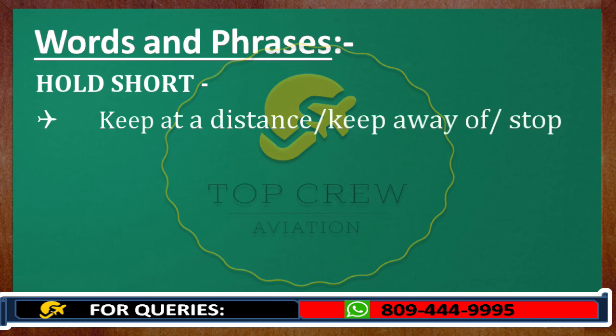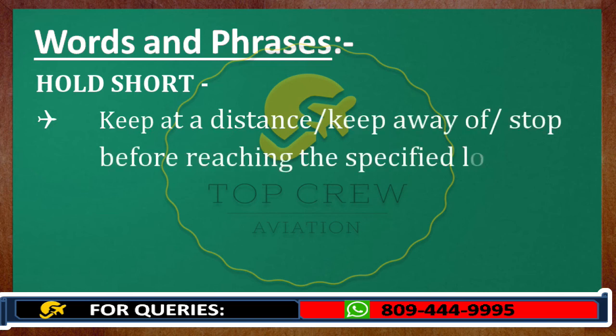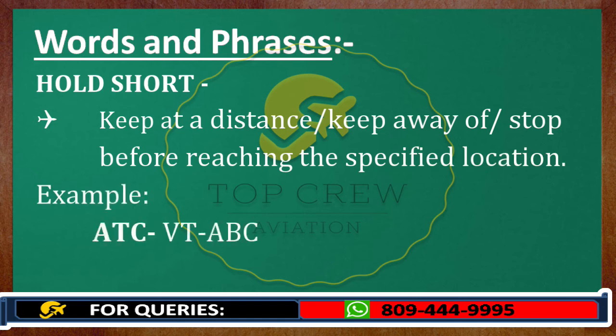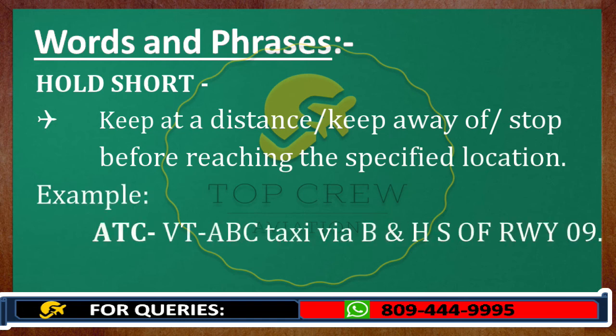Next is Hold Short, meaning keep at a distance — keep away or stop before reaching the specified location. For example, Victor Tango Alpha Bravo Charlie, taxi via Bravo and hold short of runway 09.